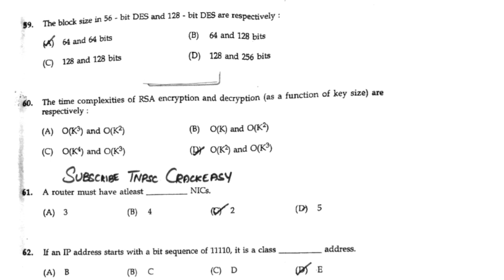The time complexity of RSA encryption and decryption respectively — the answer is option D: O(k²) and O(k³).